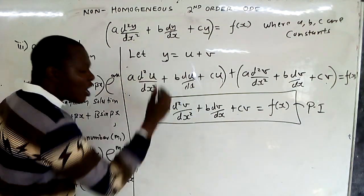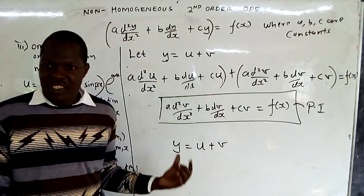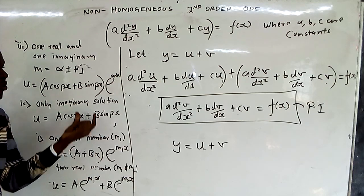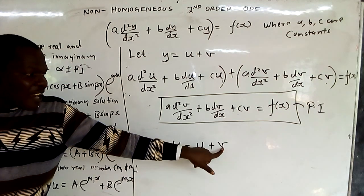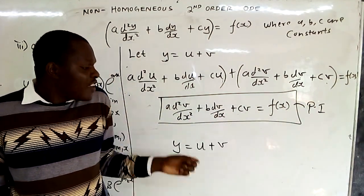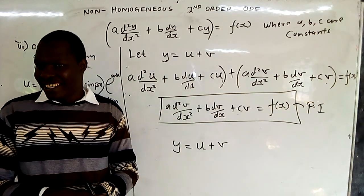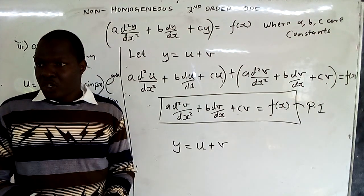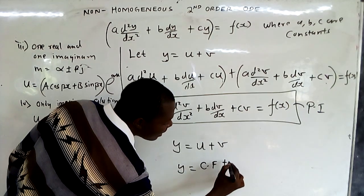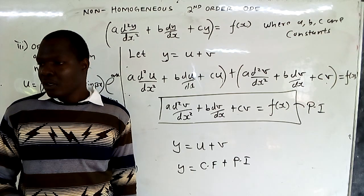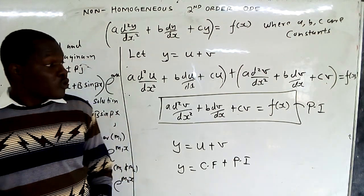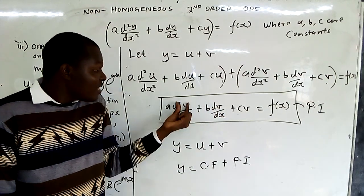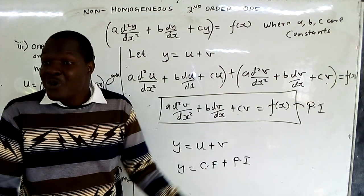At the end, the general solution of y is u plus v — that is, the complementary function plus the particular integral. V is the particular integral found by choosing v based on f(x), then differentiating. So the final solution is y = CF + PI.